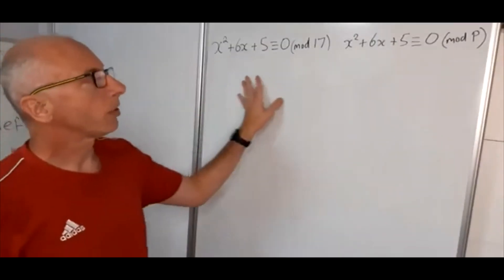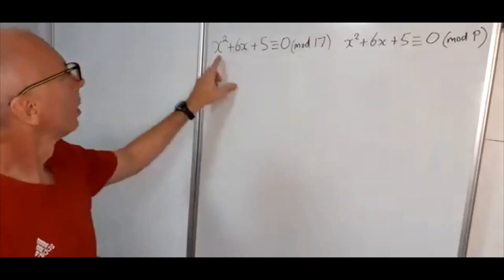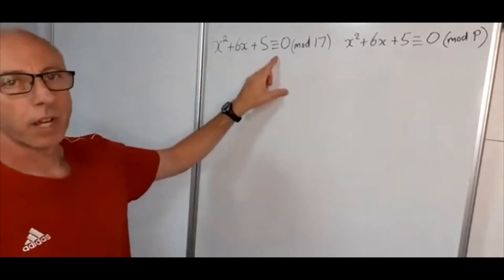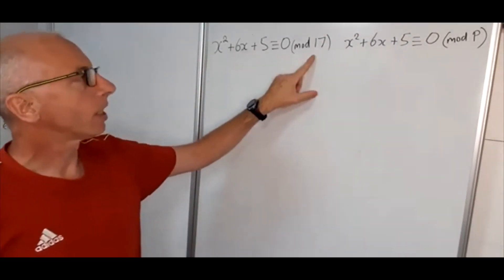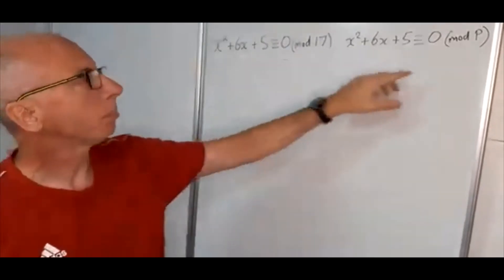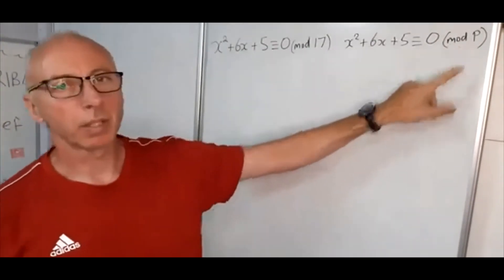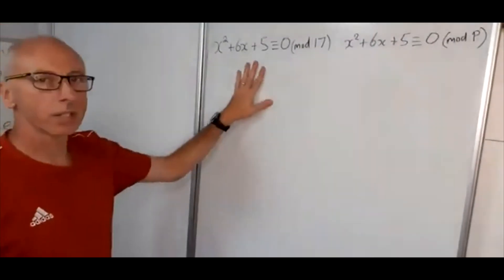Okay, so in this question we're going to solve these quadratic congruences. We've got x squared plus 6x plus 5 is congruent with 0 modulo 17. And here we've got the general case which is the same modulo p, where p is a prime number. So let's go on this side first.